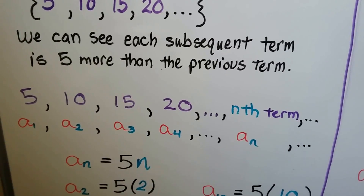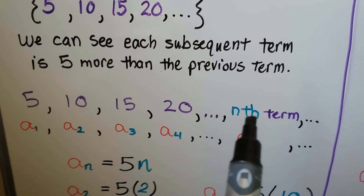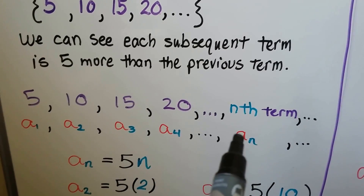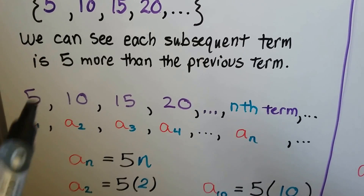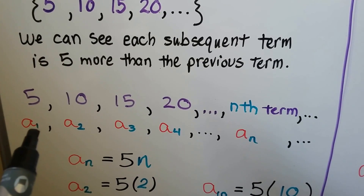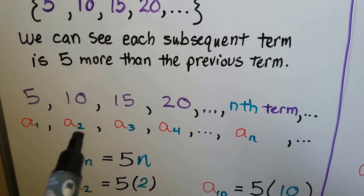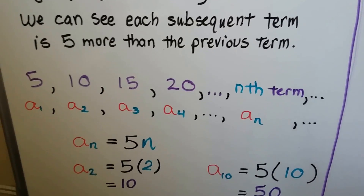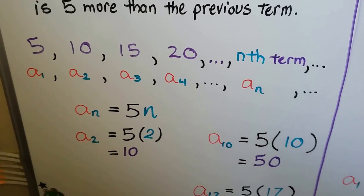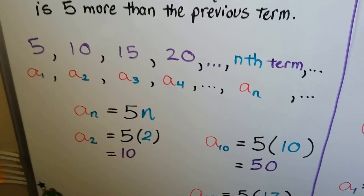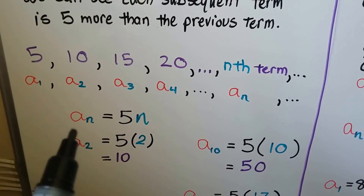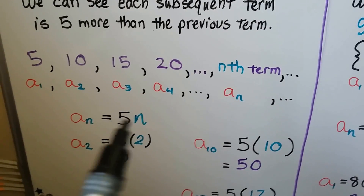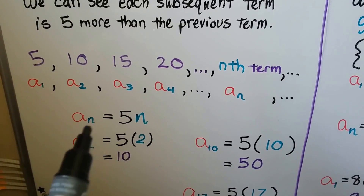We can see each subsequent term is five more than the previous term. We have five, ten, fifteen, twenty. So the nth term — some number way off down in the list — would be a sub n. We assign a subscript 1, a subscript 2, a subscript 3, so that we know where they are in the list. We're going to use these subscripts to help us. The general term is that a sub n is going to equal five times n, whatever that n is.